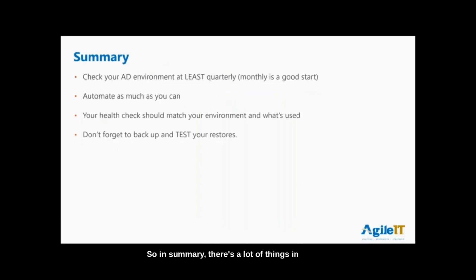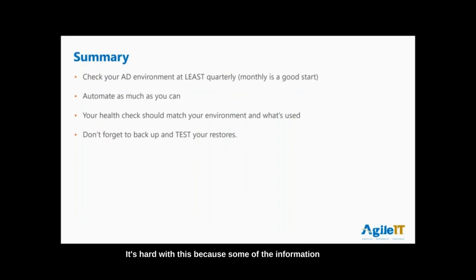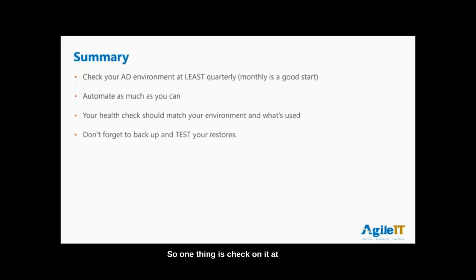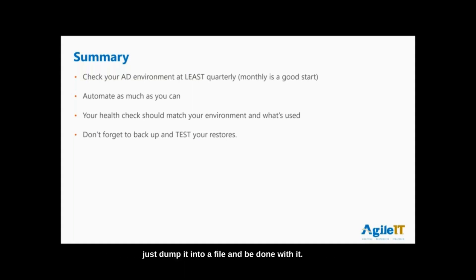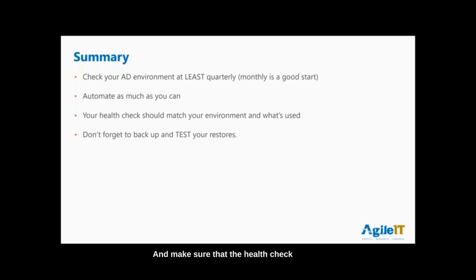In summary, there's a lot to the Active Directory subject and we'll probably do more sessions covering additional tools live. The main takeaway: check on your AD health at least quarterly — monthly is a really good cadence. Automate as much as you can — you can create a Windows Scheduled Task to run DC Diag or Repadmin from the command line and dump results into a file. Make sure the health check you use really matches your environment; a simple health check won't be sufficient for a complex environment.